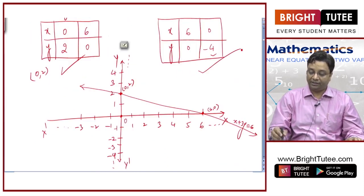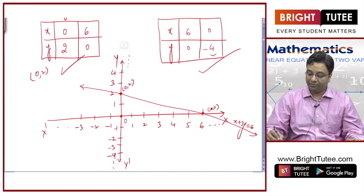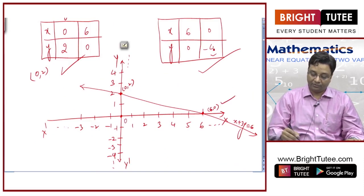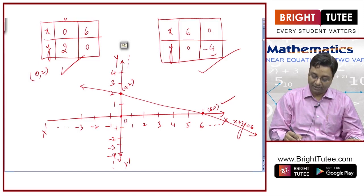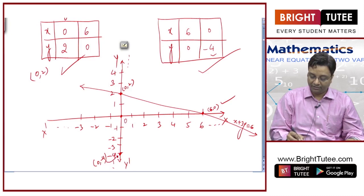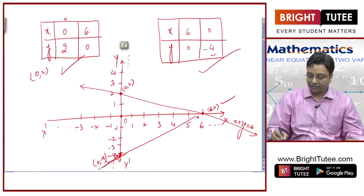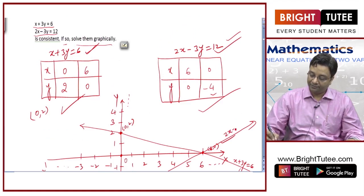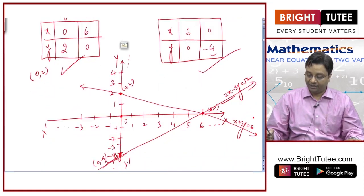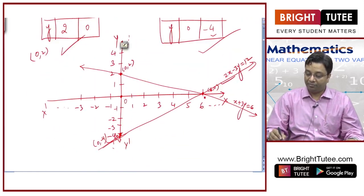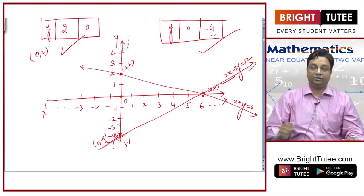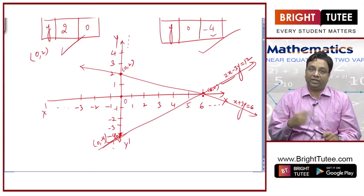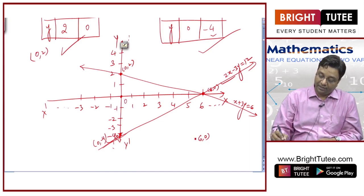Now let us draw the second graph. The points are 6,0 — the same point as before — and 0,minus 4. So 0 for x and minus 4 for y is plotted here. The graph passes through these two points. We name this line 2x minus 3y equals 12. You can see that these two lines pass through the common point 6,0.